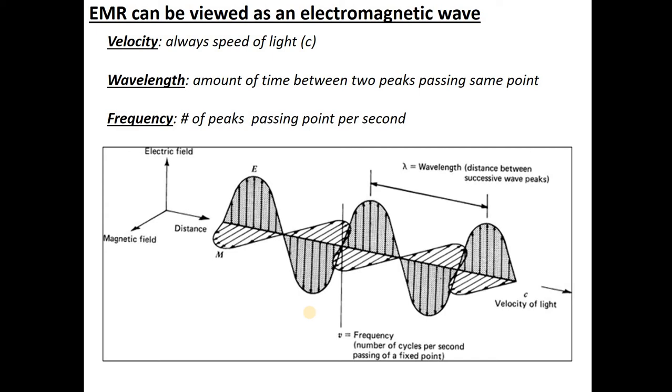So one way to view EMR is as an electromagnetic wave. If we think of this in the wave model, it's a wave front that is traveling at the speed of light, so that's C. And it has different properties. One property is the wavelength, that would be the distance between successive peaks. So here's a peak, here's a trough, and here's another peak. And we can also think of it as having a frequency. Frequency is the number of wave peaks that are passing a given point per second.